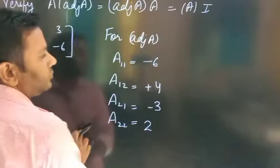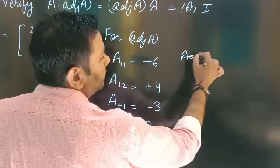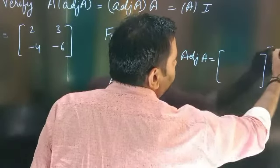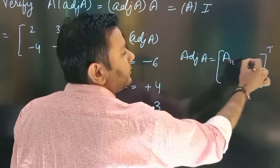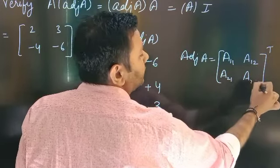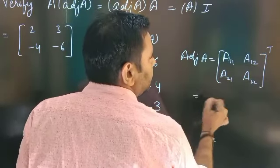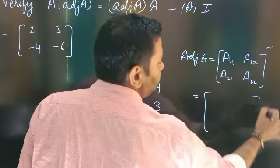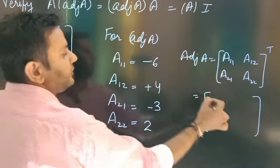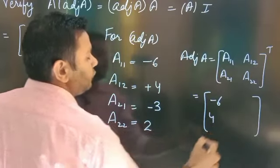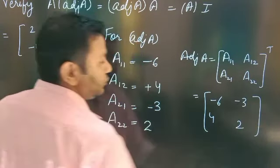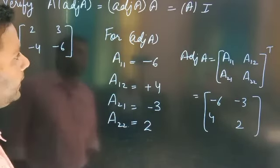अब adjoint A की बात करते हैं — adjoint A is the transpose of co-factors. Co-factors आपने mention किये, इनका transpose करते हैं। Directly transpose कर देता हूँ: A11 = minus 6, A12 = 4 आएगा, A21 = minus 3, A22 = 2। Adjoint मिल गए आपको।